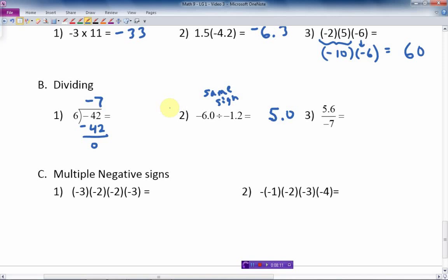Number 3. Divide those two numbers. 5.6 divided by 7 is 0.8. And the sign is going to be what? Well, they're different signs. And the sign is going to be negative. Different signs.